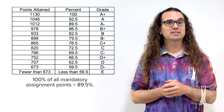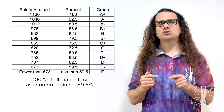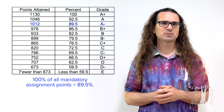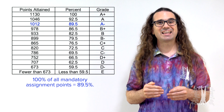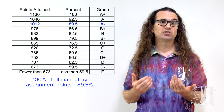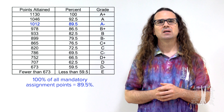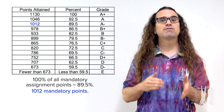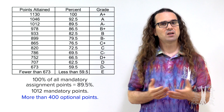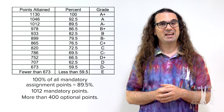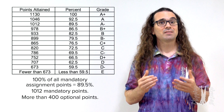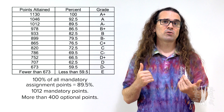Here is an example grading scale from one of my classes. You can see that the total number of points from mandatory assignments only gets you to 89.5% of the points. In order to get an A in my class, you need to do more than just the mandatory assignments. There are 1,012 mandatory points; however, there are also more than 400 optional points. Every semester, I have students who end up with more than 100% in the class — they do much more than the mandatory minimum and they get a grade that reflects that.